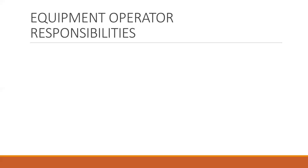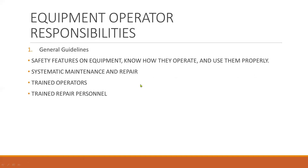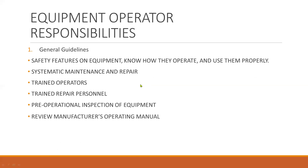Equipment operator responsibilities. First, the general guidelines: know the safety features on equipment, how they operate, and use them properly. Make sure equipment operators know their responsibilities. This includes systematic maintenance and repair, trained operators, trained repair personnel, pre-operational inspection of equipment, and review of the manufacturer's operating manual. Be specific.